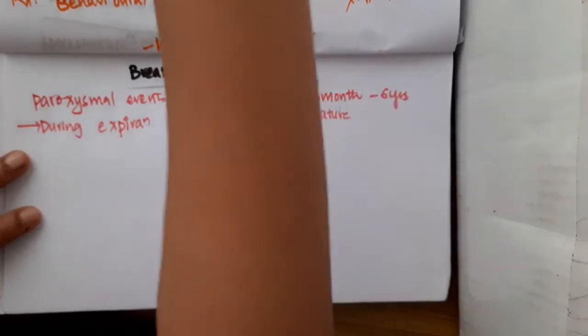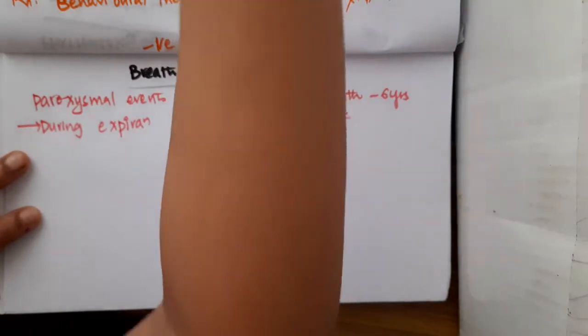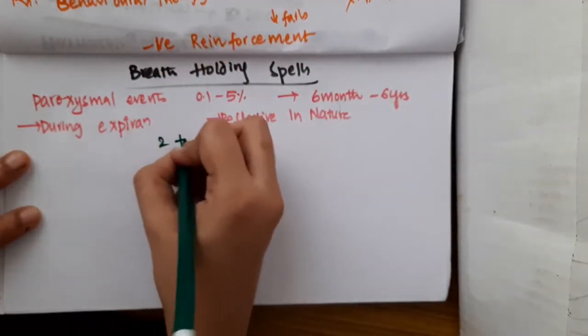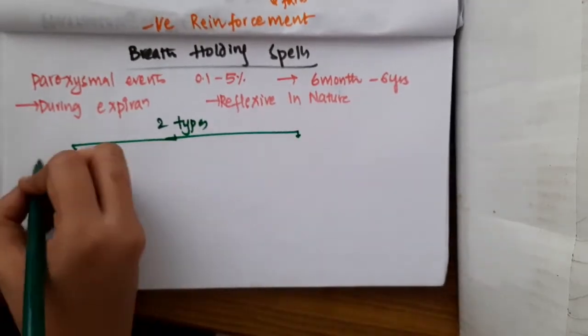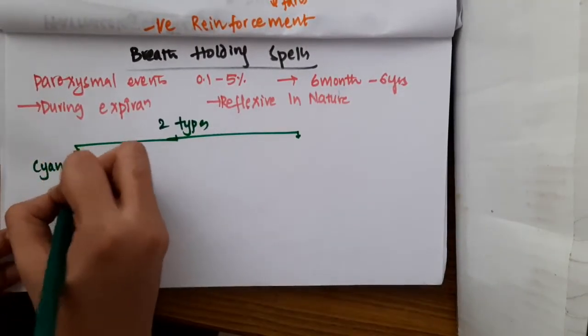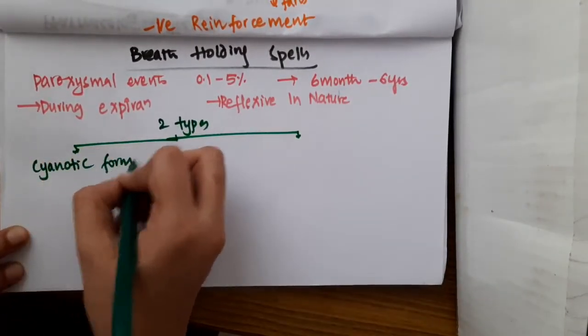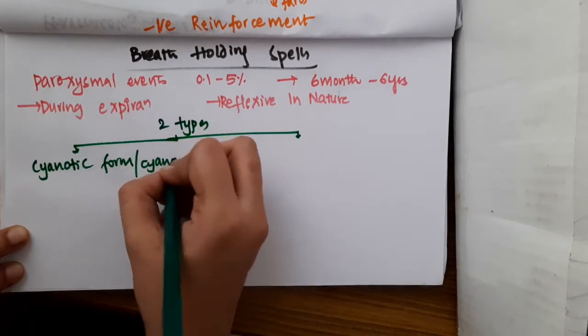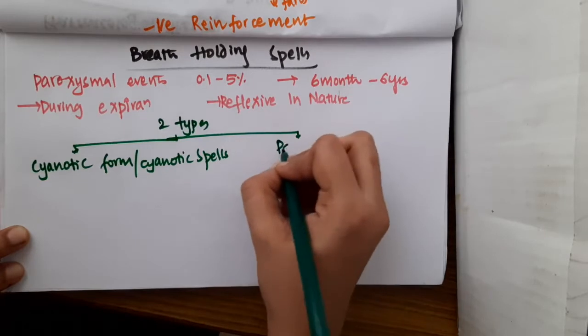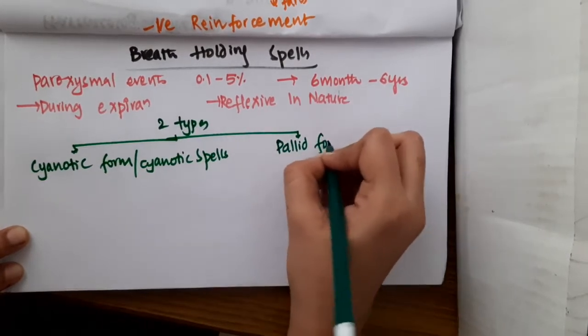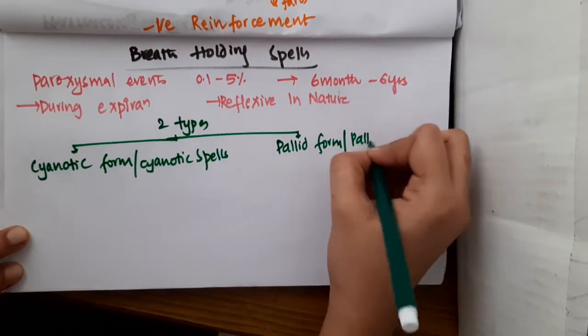So there are two types of breath holding spells. One we have cyanotic form or also called cyanotic spells, second we have pallid form or also called pallid spells.